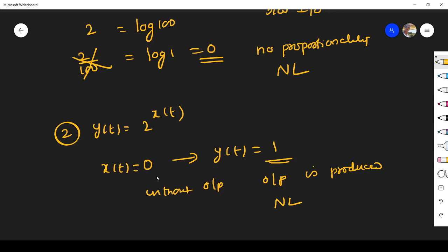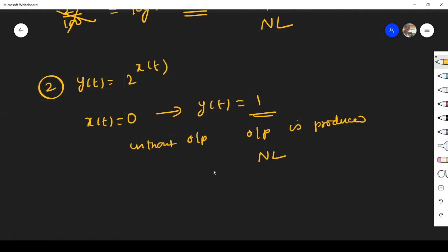So if there is no input for linear system, output for linear system should also be 0. That is very important. Input 0 means output is also 0 for linear system.